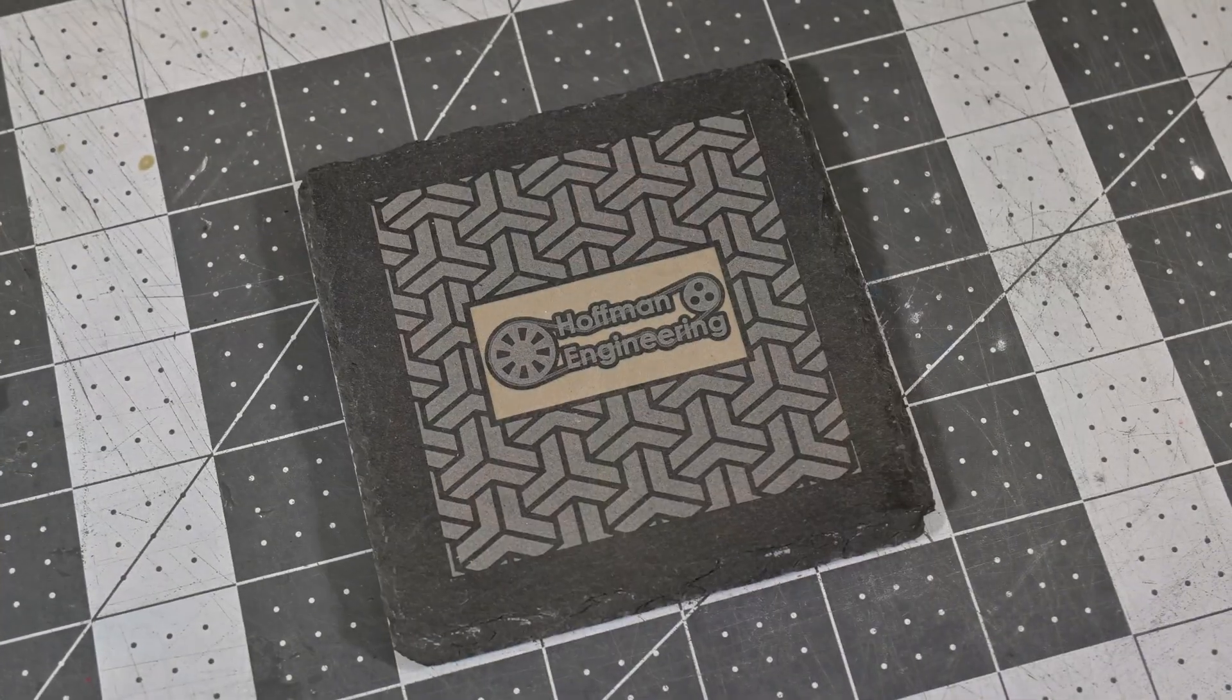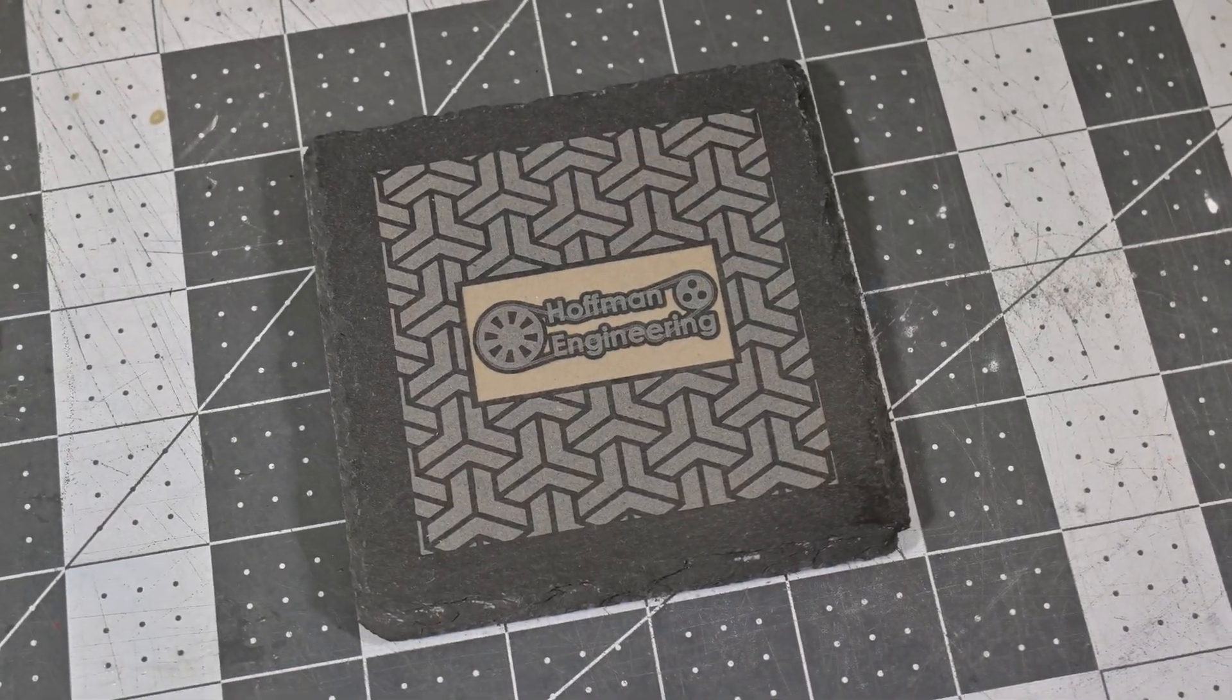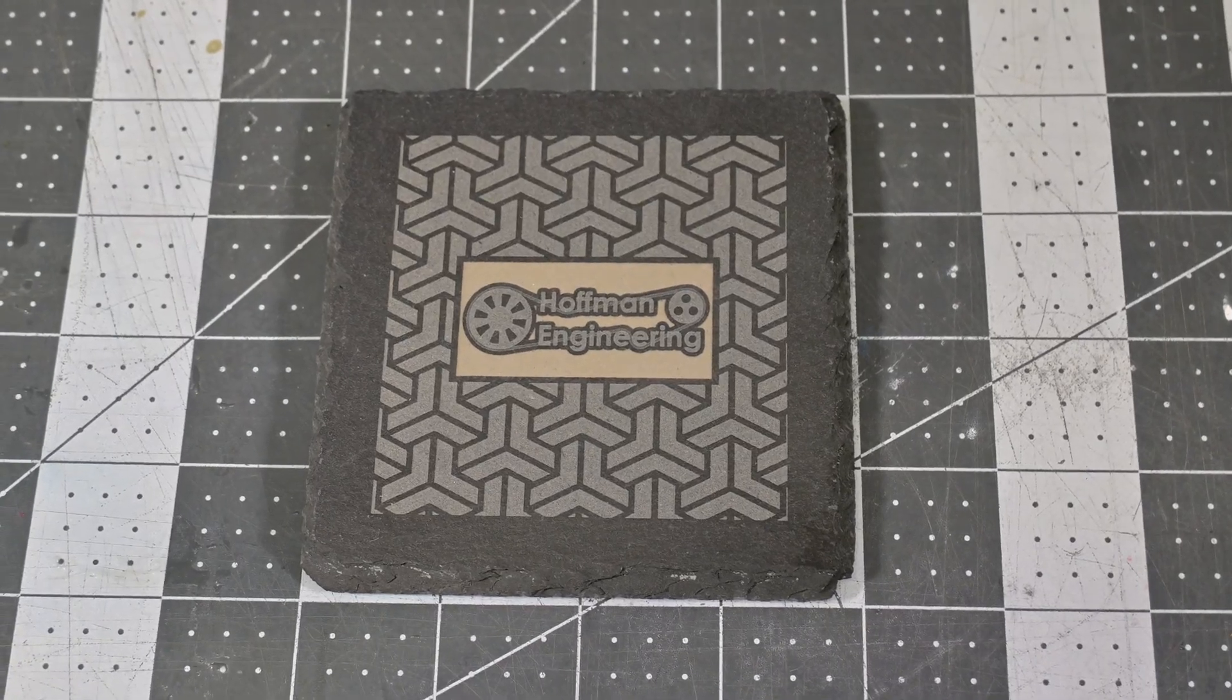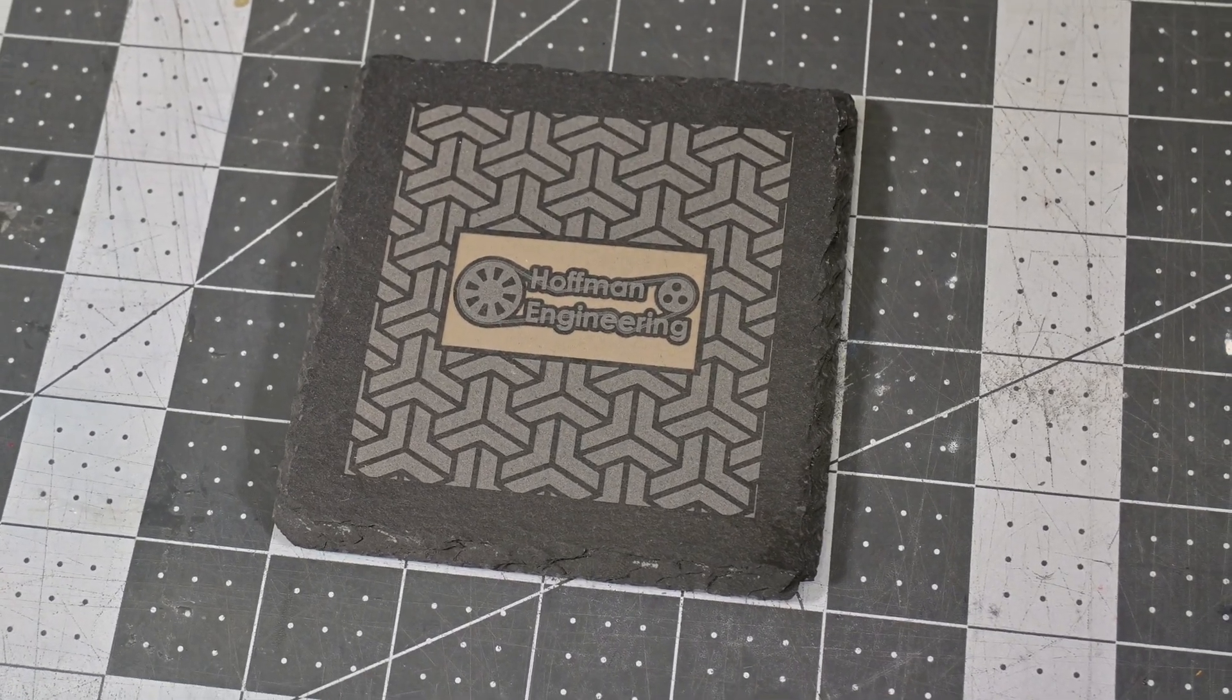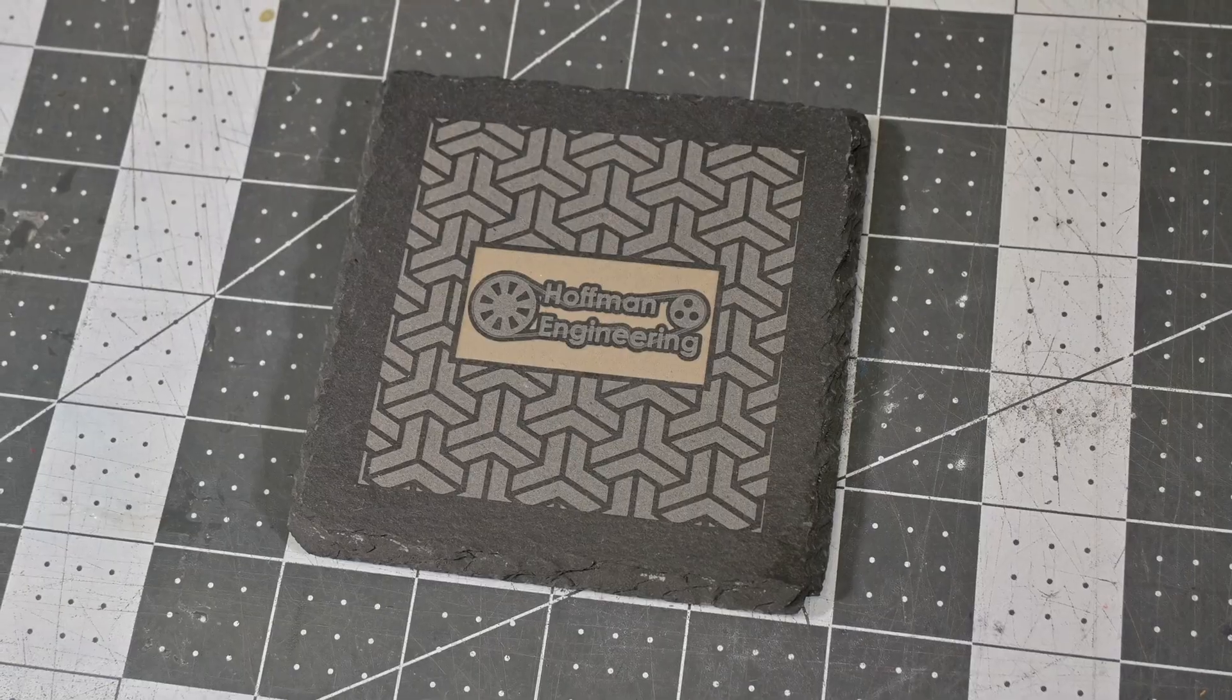And finally, let's engrave some slate coasters. I was able to get a nice variety of effects on slate. Multiple passes engrave pretty deeply, and while a single pass at a lower power gives a brilliant white engraving. I love the look of this coaster.